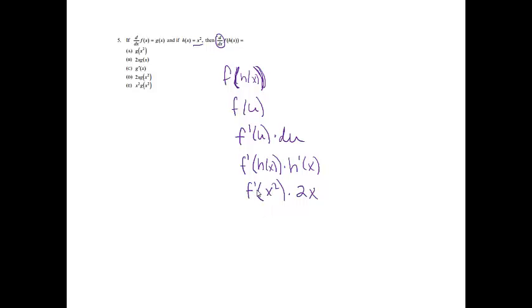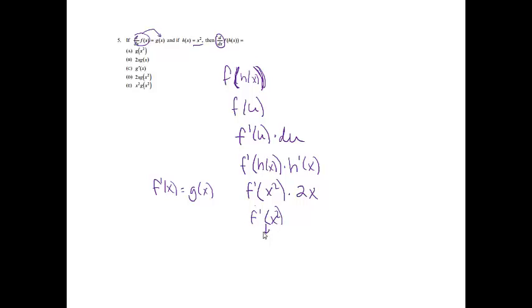Finding f prime of x squared: since the derivative of f is equal to g, f prime of x equals g of x. Therefore f prime of x squared equals g of x squared times 2x, which is choice D.